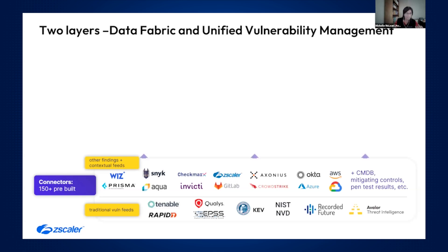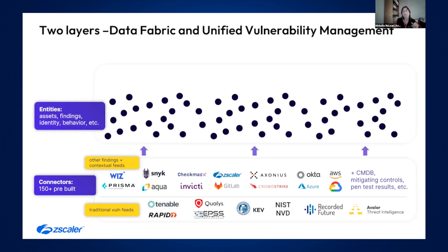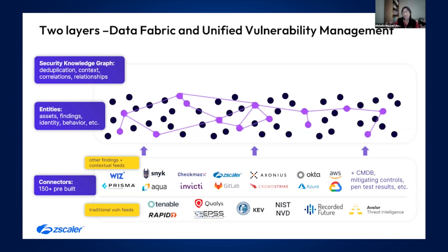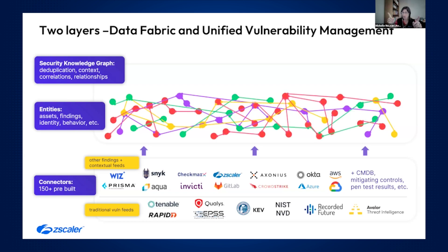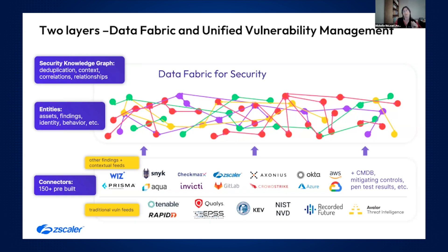All of these discrete little data points — we call them entities — come into the data fabric. The magic of the data fabric is in stitching that all together, seeing the connections amongst those things, seeing that this and this and this are all the same asset, but each tool brings a little bit more of the picture. Bringing that all together, deduplicating the findings, correlating the findings, and enriching the findings — this is where we really learn to understand what's happening in the environment.